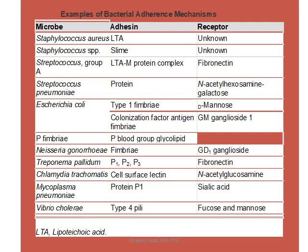Lipoteichoic acid and M protein bind through fibronectin, so you can either block the bacterial side or the host receptor. E. coli uses fimbriae and mannose receptors. Significant work has been done identifying these interactions. What is still lacking is approved drugs to block those receptors — we need to determine what to block on the bacteria versus what to block on our own surfaces to stop adhesion.